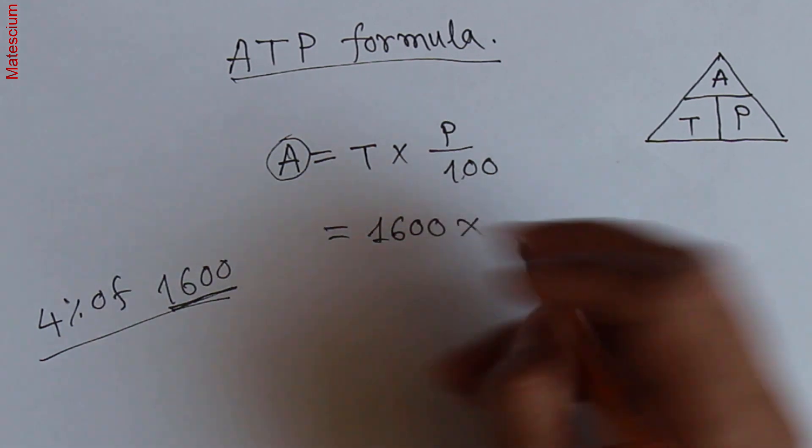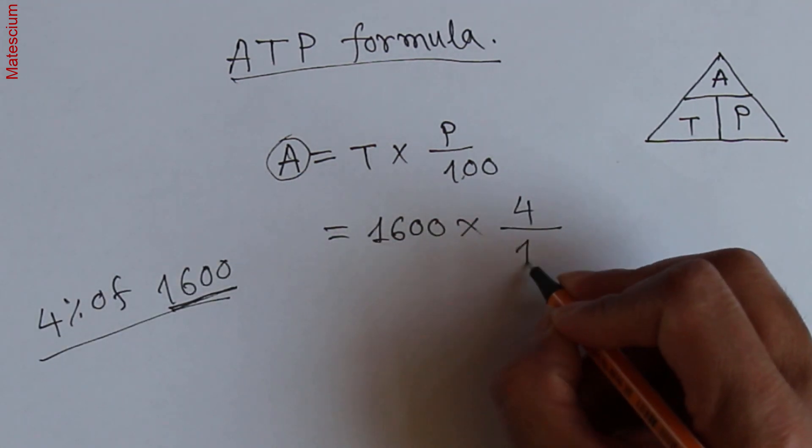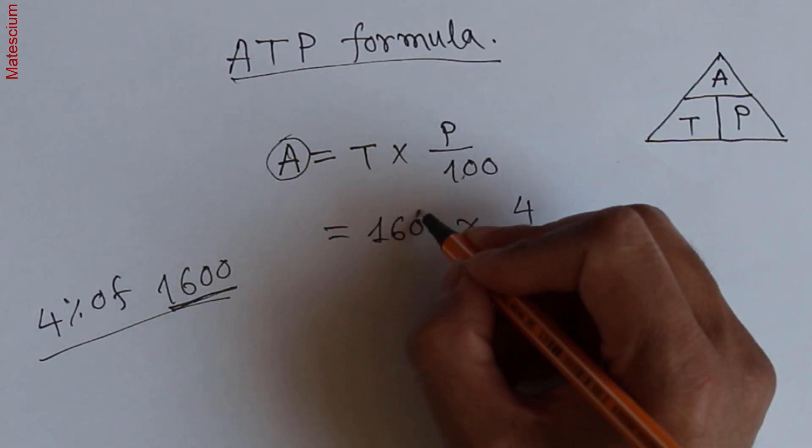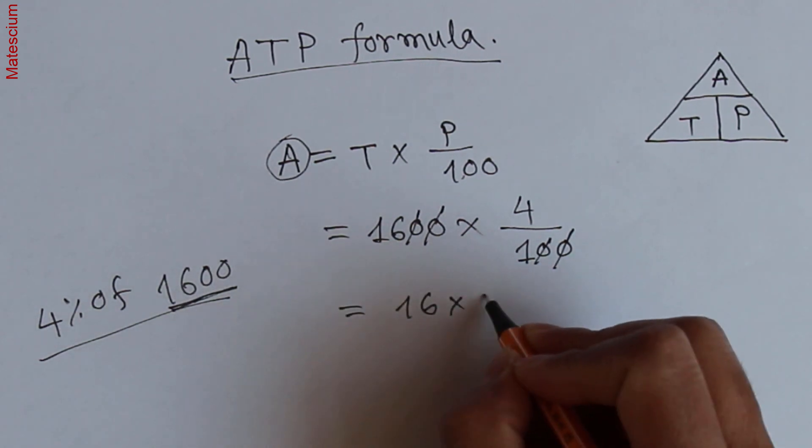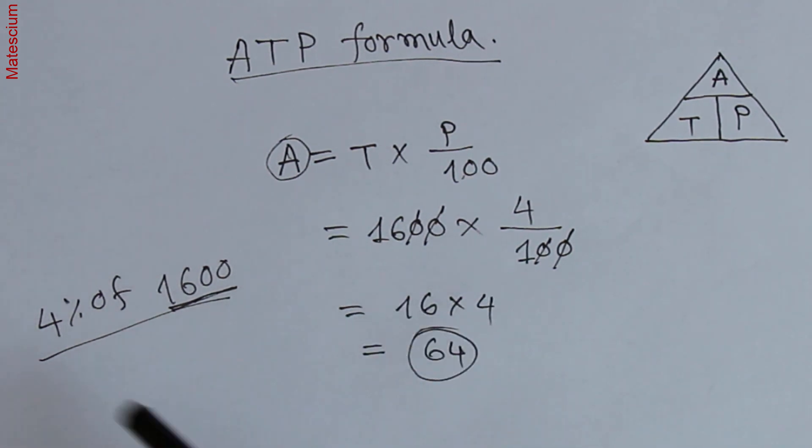Percentage is 4 and divided by 100. This zero and that zero, this zero and that zero, they cancelled each other. And remaining is 16 times 4 which equals 64. Yes, 64 is the answer of 4 percent of 1600.